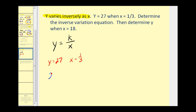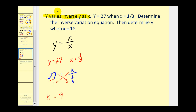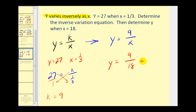Using these values in the equation, we have 27 equals k divided by one third. Putting 27 over 1, we have a proportion where k times 1 must equal 27 times one third. Multiplying by one third is the same as dividing by 3, so k equals 9. Now we have our inverse variation equation: y equals 9 divided by x. To determine y when x equals 18, y equals 9 divided by 18, so y is equal to one half when x equals 18.